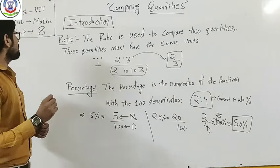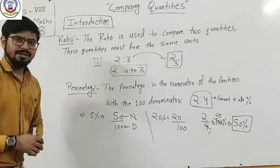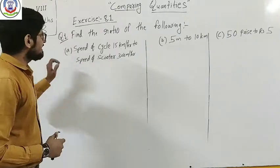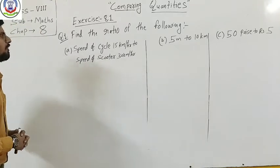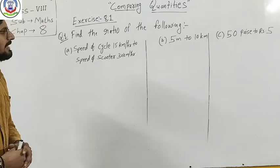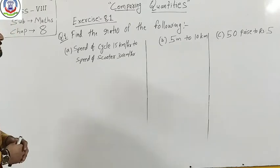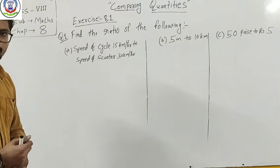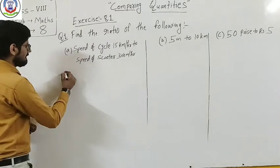Question number 1: Find the ratio of the following. First question is speed of cycle is 15 km per hour to speed of scooter is 30 km per hour. We need to find the ratio.